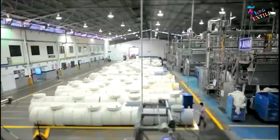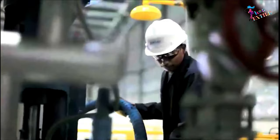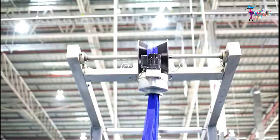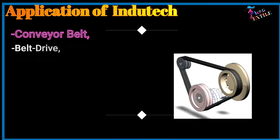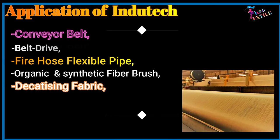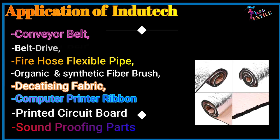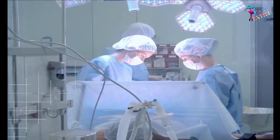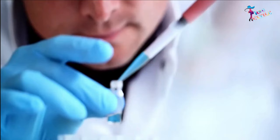Technical textiles are proving their worth in the industrial sector, providing a boost to the progressive industrial and technological front. Textiles utilized for industrial applications are referred to as intech. Applications of intech include conveyor belts, belt drives, fire hoses, flexible pipes, organic and synthetic fiber brushes, decatizing fabric, computer printer ribbons, printed circuit boards, and soundproofing parts.